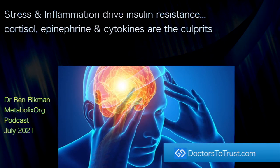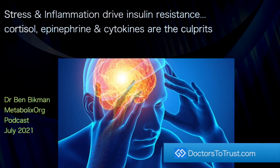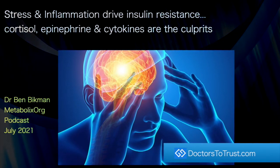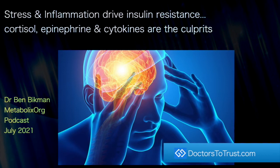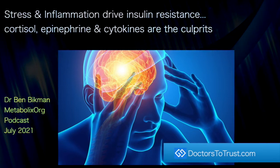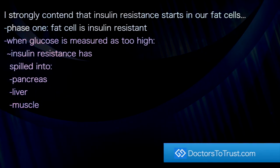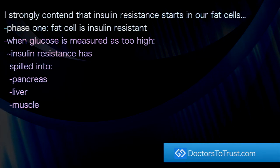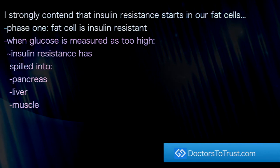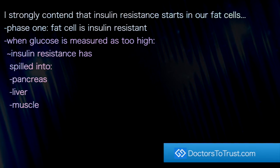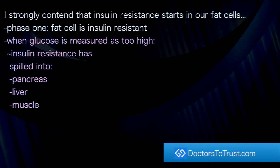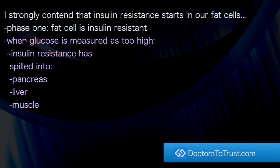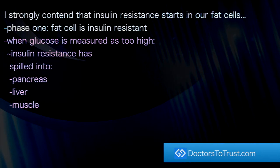Stress and inflammation drive insulin resistance. Cortisol, epinephrine, and cytokines are the culprits. Dr. Ben Bickman strongly contends that insulin resistance starts in our fat cells — phase one, the fat cell is insulin resistant. When glucose is measured as too high, insulin resistance has spilled into the pancreas, the liver, and our muscles.